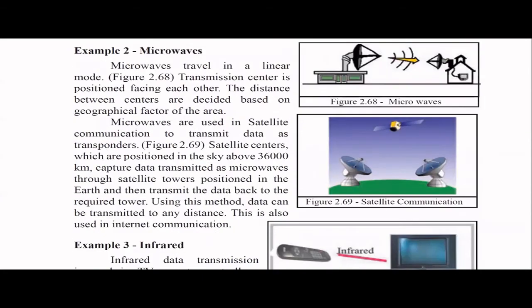Then come microwaves. Microwaves travel in a linear mode, so they cannot have obstacles in between. Transmission centers are positioned facing each other. The distance can be very far — for example, in satellite communication we use microwaves. Satellite stations are positioned in the sky above 36,000 kilometers, and the satellite towers on earth are aligned so data can be transmitted. Most internet communication actually happens using microwaves.